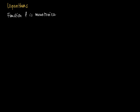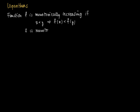A function f is called monotonically increasing if I start with two elements from the domain, x and y, such that x is smaller than y, then f(x) should be smaller than f(y). Similarly, f is monotonically decreasing if x smaller than y implies that f(x) is larger than f(y). So for higher values in the domain, I get lower function values.